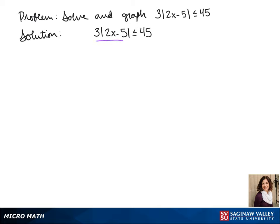Our first step is going to be to solve for our absolute value, so we divide both sides by 3, and we get the absolute value of 2x minus 5 is less than or equal to 15.